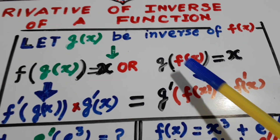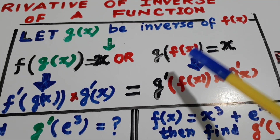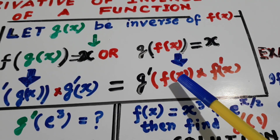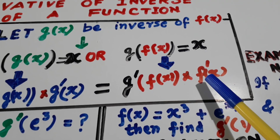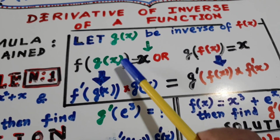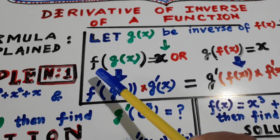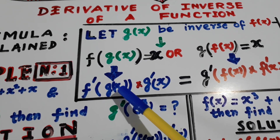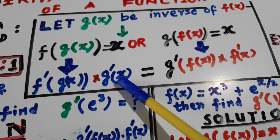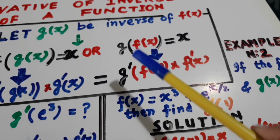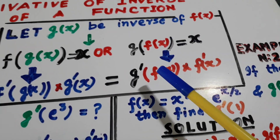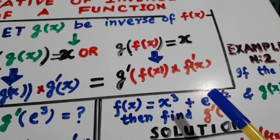So its derivative will be g dash. Whosoever is sitting inside, keep it sitting inside. Now let us go inside and find its derivative, that is f dash x. So if it is f(g(x)), we will find the derivative of this. It will be f dash, with g(x) inside. Now let us go inside and find its derivative. Similarly, g is outside — first find the derivative of g, let f(x) be inside, then go inside and find the derivative of f(x).